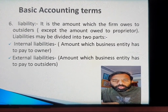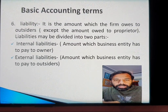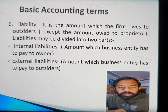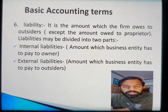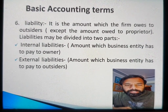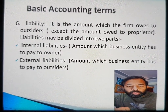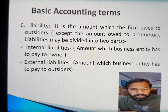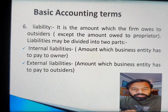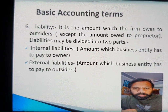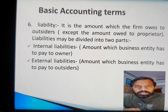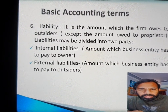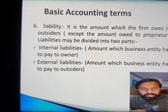Liabilities are further divided into two categories: internal liability and external liability. Internal liability means what the firm or business entity has to pay to the owner or proprietor. External liability is the liability which the business entity has to pay to the outsider.